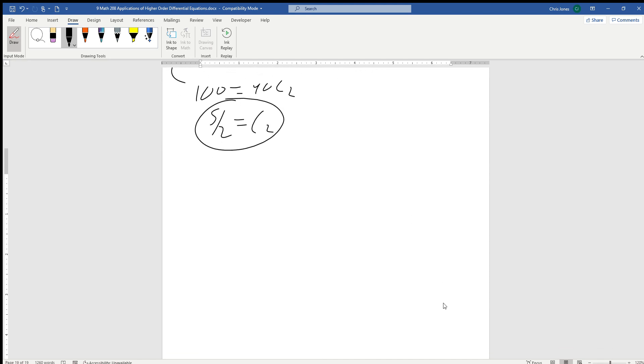Now, almost done. We have Q at T is equal to e to the minus 20T. We have that C1 was 5, cos of 40T, and then we have 5 halves of our sine of 40T.